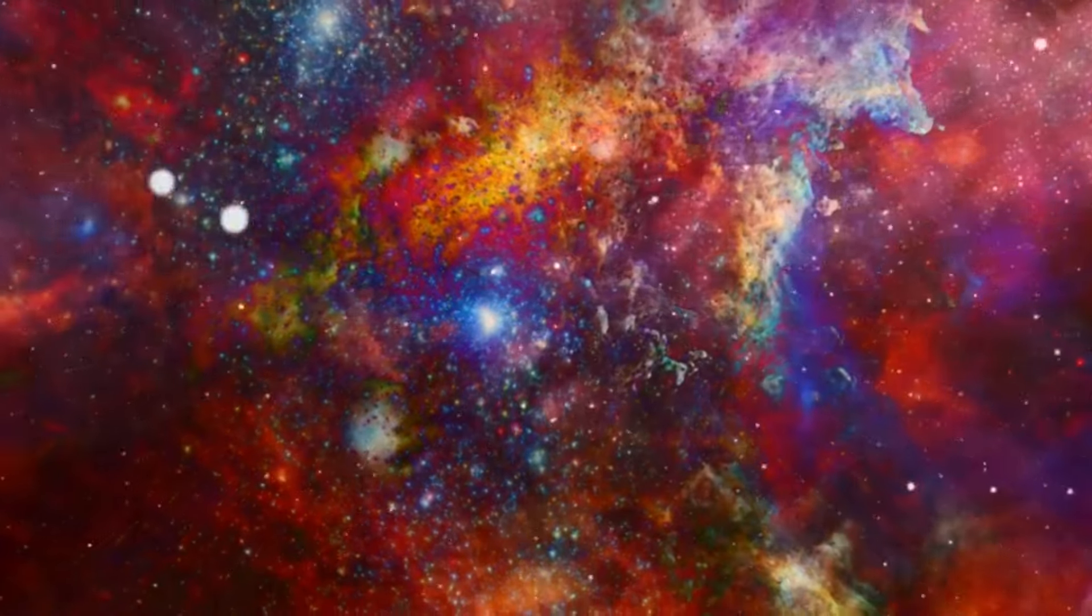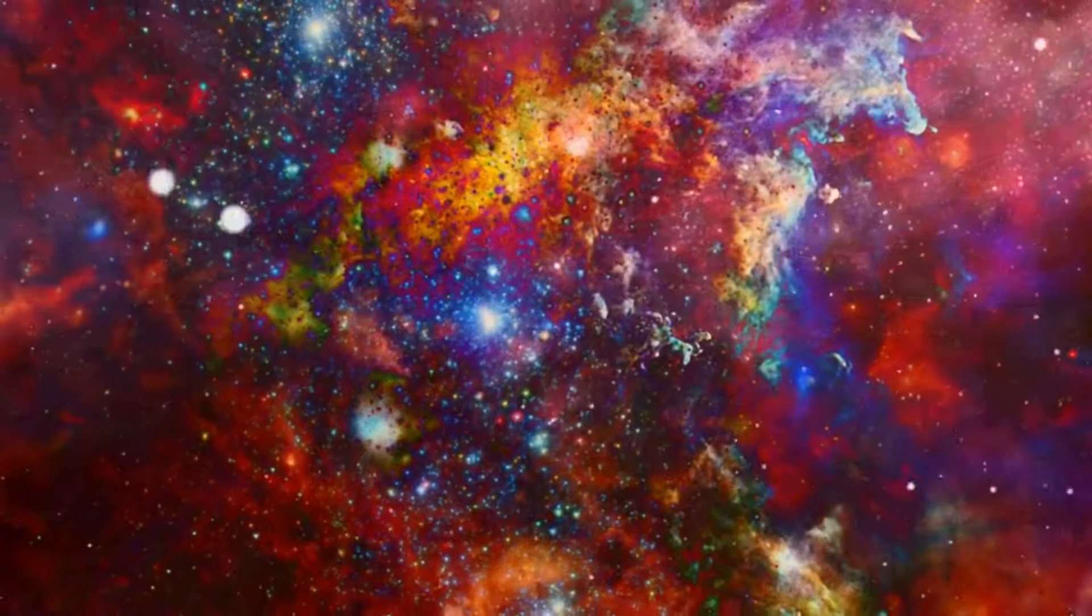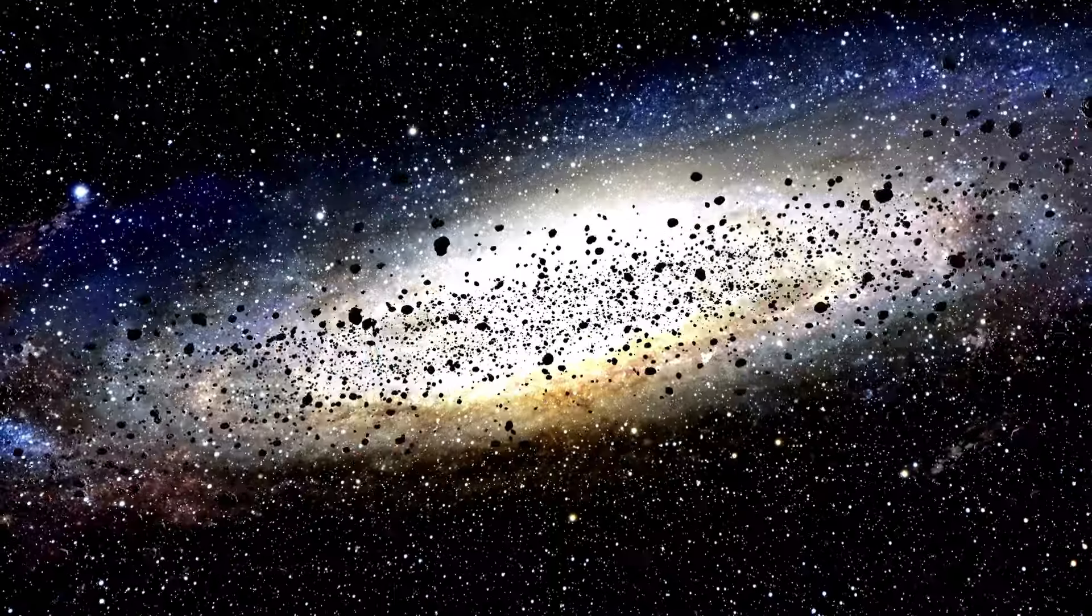But as stars run low on hydrogen, they evolve, embracing new energy sources. In the case of Betelgeuse, as the hydrogen depletes, it begins to burn helium, leading to the formation of carbon and oxygen. This transition from the main sequence phase to the helium burning phase is marked by the star's expansion into a red giant.